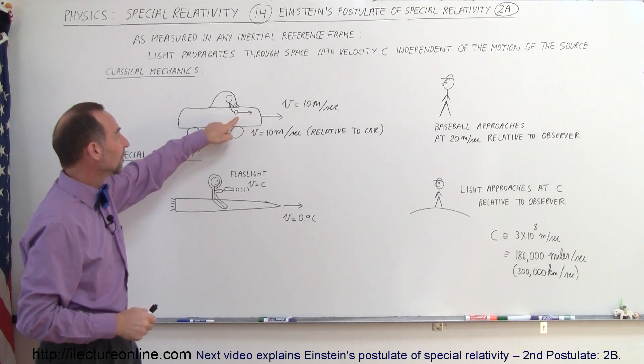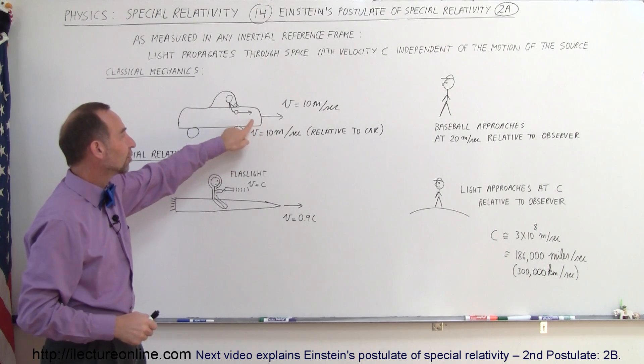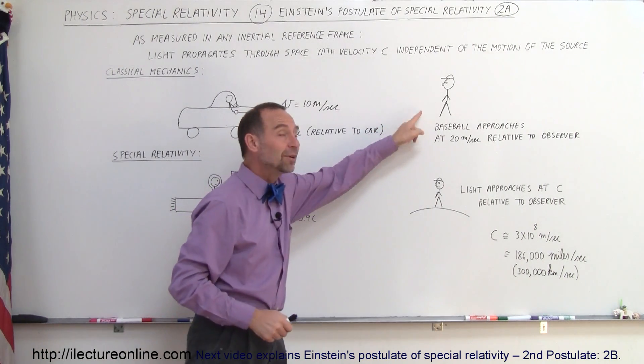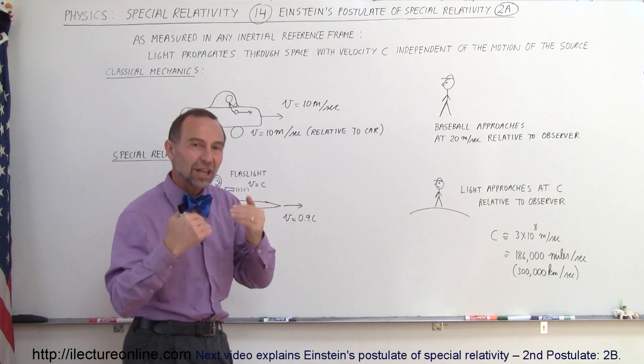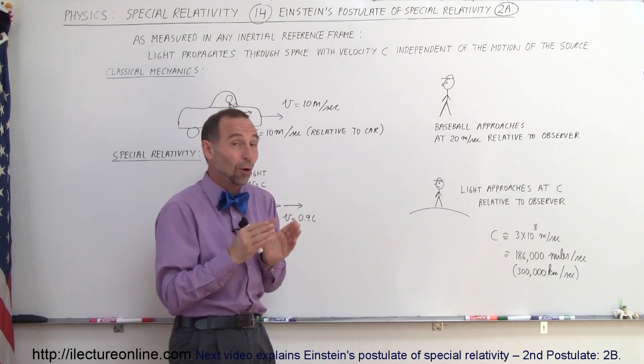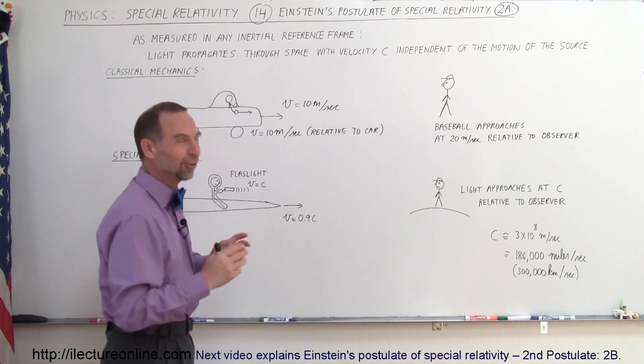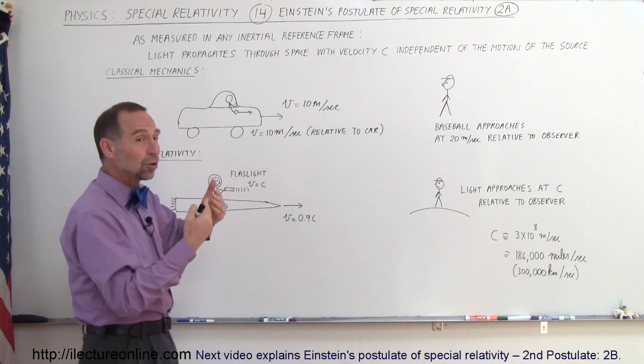So the baseball is moving at 10 meters per second relative to the car, but is moving at 20 meters per second relative to an observer who's stationary on the road in front of the car, hopefully not right in the path of the car so it doesn't get run over. That's what we're used to.